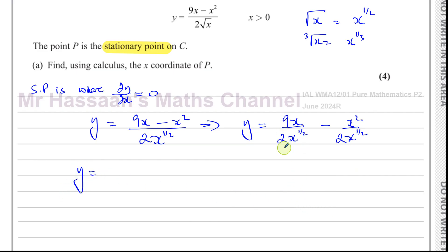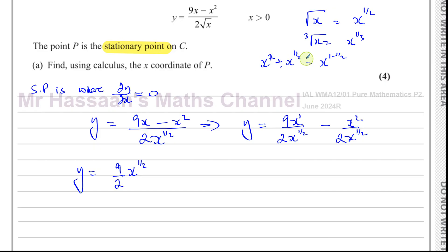Next we have 9 over 2, and then x to the power of 1 divided by x to the power of a half. When dividing two numbers in index form with the same base, you subtract the powers, and 1 minus a half is a half, so that's x to the power of a half. Similarly, for the second term, you have x squared divided by x to the power of a half, giving a coefficient of 1 over 2, and 2 minus a half is 3 over 2, so it's x to the power of 3 over 2. Now it's ready to differentiate.